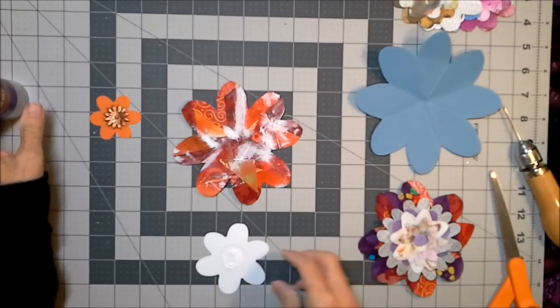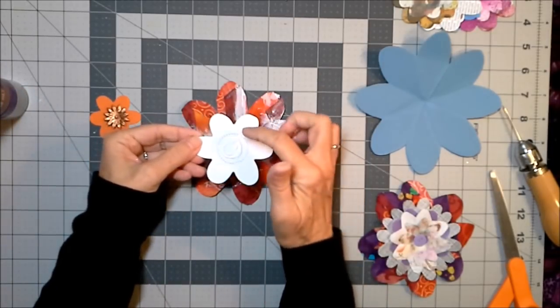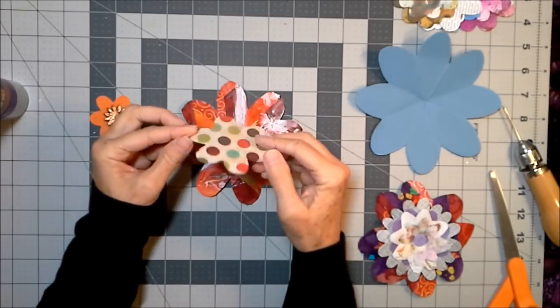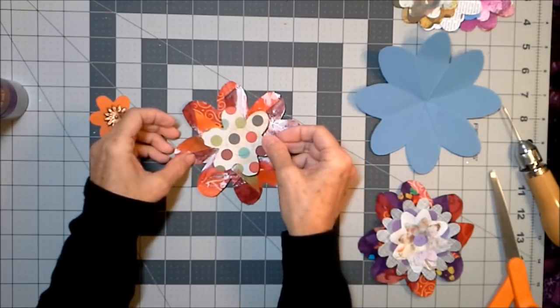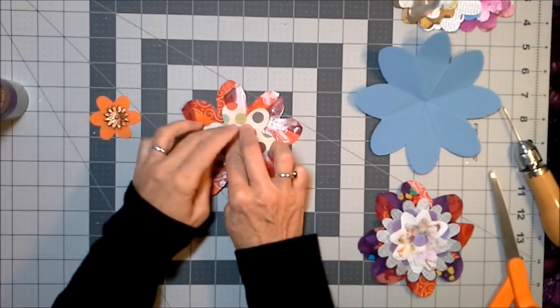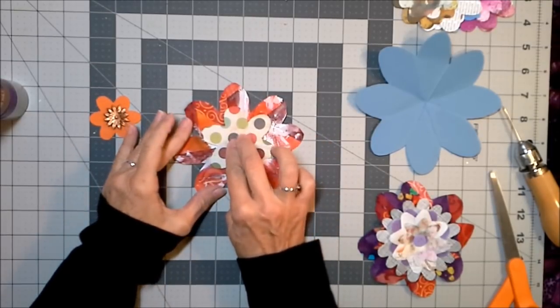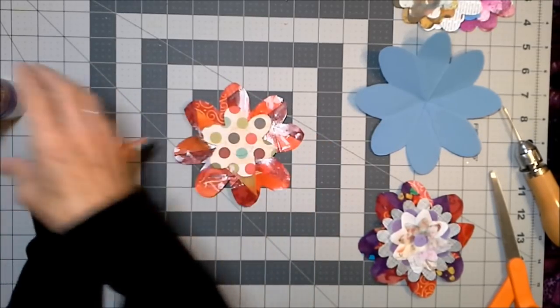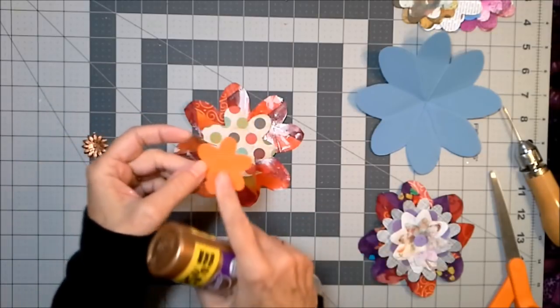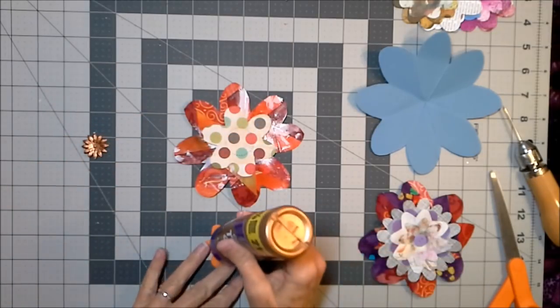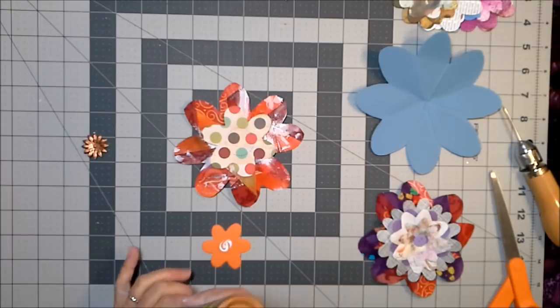I am not taking the glue all the way to the edge of this because I do want it to have a little bit of a 3D kind of effect. Look at that one, isn't that pretty? That looks like corrugated cardboard. That one's really super cool.